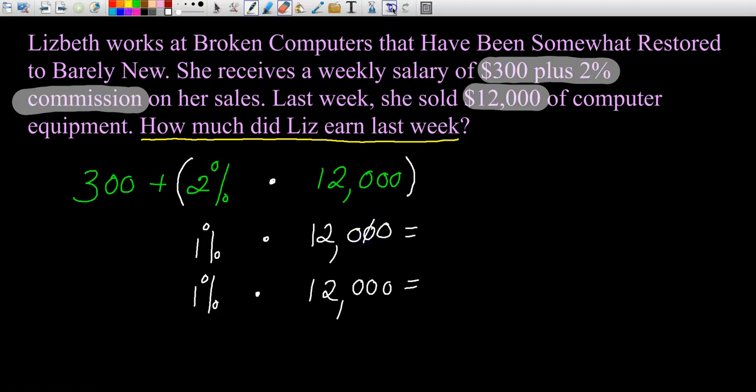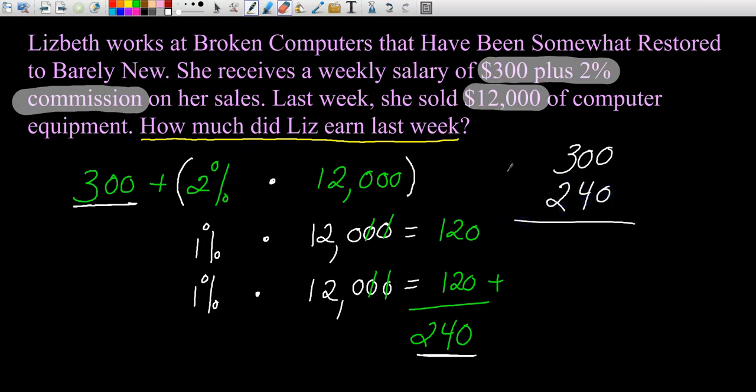If you remember, when we took 10%, we dropped off one zero. When you take 1%, you actually drop off two zeros or move the decimal back two times. So I'll drop off two zeros, and I'm left with 120. Then I'll take 1% of $12,000 again, that's 120. And I'll add these two up, that'll be 2% of $12,000. So 120 plus 120 is 240.